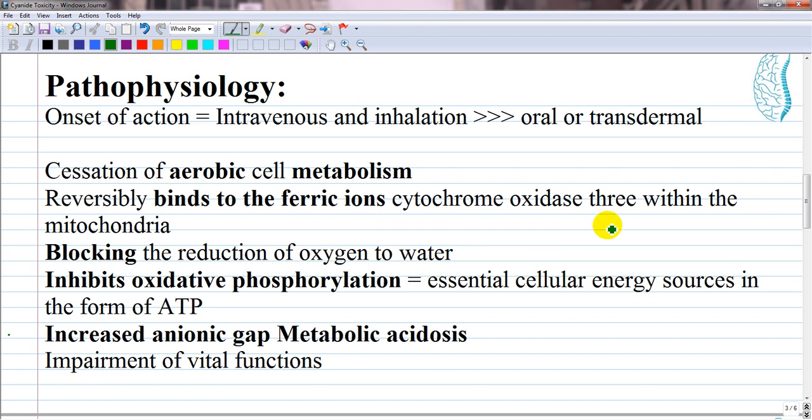Cellular hypoxia and the depression of ATP occurs, leading to metabolic acidosis. The utilization of oxygen by the tissue occurs and is followed by the impairment of vital functions.